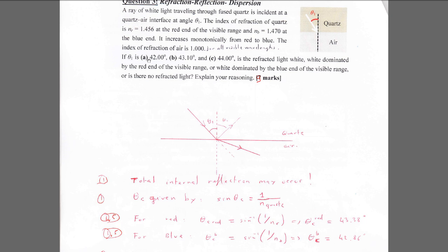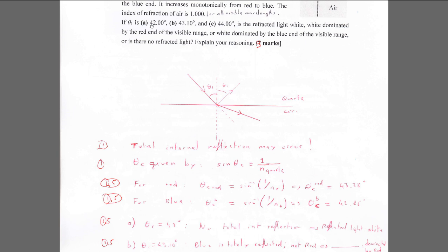For case A, theta equals 42 degrees. This is lower than both critical angles, so there will be no total internal reflection within the visible range. All wavelengths of visible light will be refracted and transmitted into air, therefore the refracted light will be white.